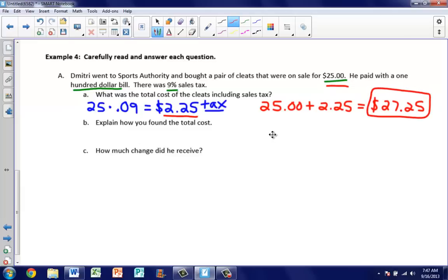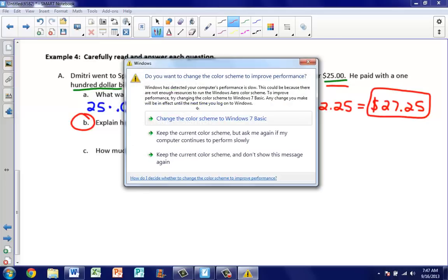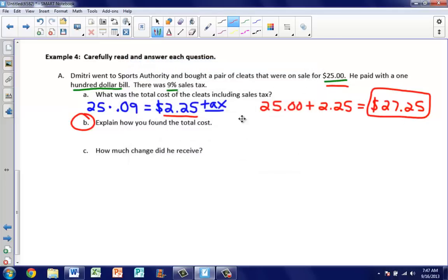Explain how you found the total cost. We just did that. So in your own words, make sure you're answering part B. What did you do? We multiplied our price times the percent of sales tax, and once we got that sales tax, we added it to the original price. Lastly, for part C, we want to know how much change did he receive? He paid with a $100 bill. So we have to take 100 and subtract the total amount that he spent, which was $27.25. When we do this, Dimitri should have received $72.75 in change.